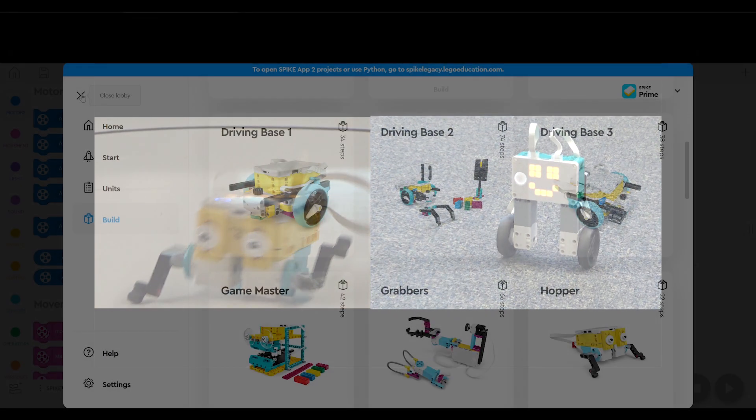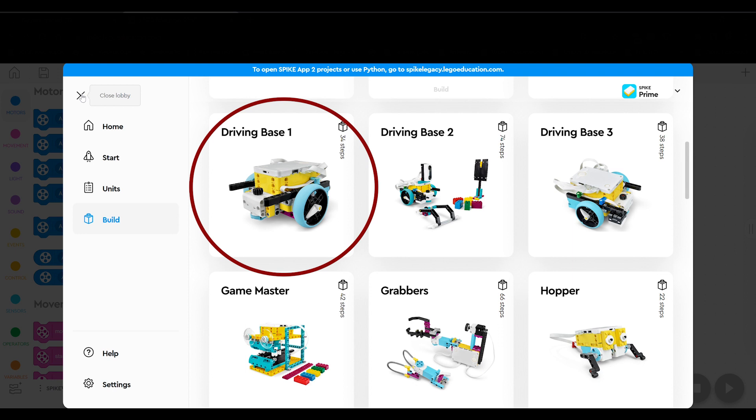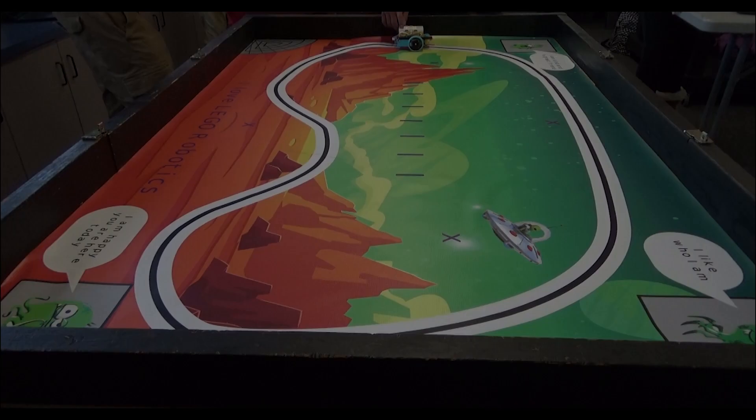The third robot I have my kids build is driving base one out of the Spike Prime set. This is the first wheeled robot the kids build. I don't really have them use the third large motor in the project.